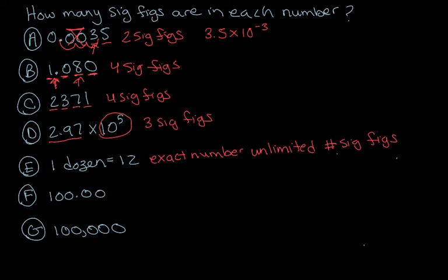For F, there are trailing zeros that come to the right of a non-zero number, so they're significant. And the zeros that come after a decimal point are also significant, so we have five sig figs.